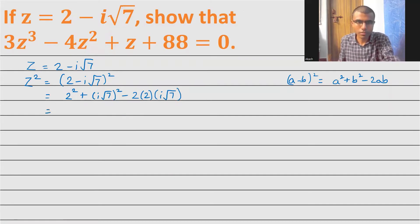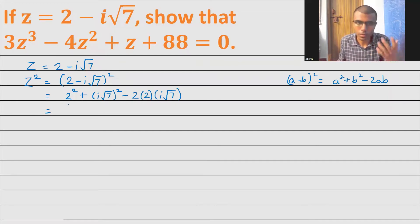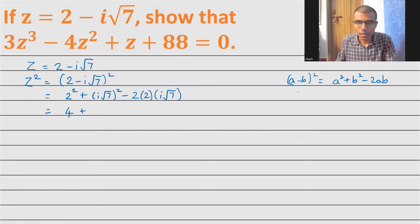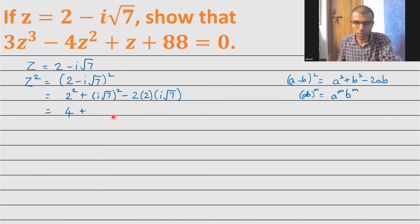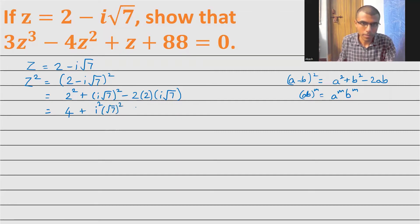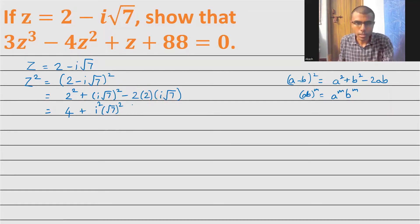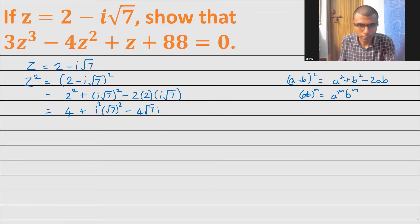You can write it as √7·i as well, that's totally fine. Now 2² is 4. For (i√7)², we apply the rule (ab)^m = a^m · b^m, so this becomes i² × (√7)². And 2 × 2 × √7 = 4√7, so the last term is -4√7·i.